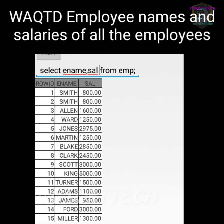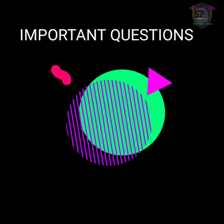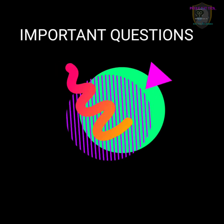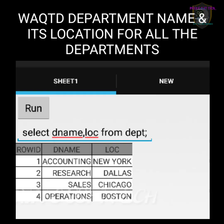Next we will discuss some important questions frequently asked in interviews. Write a query to display department name and its location for all the departments. We want department names along with locations, which we can find in the department table. So: SELECT dname, loc FROM dept; — here we get dname and location of the department table.